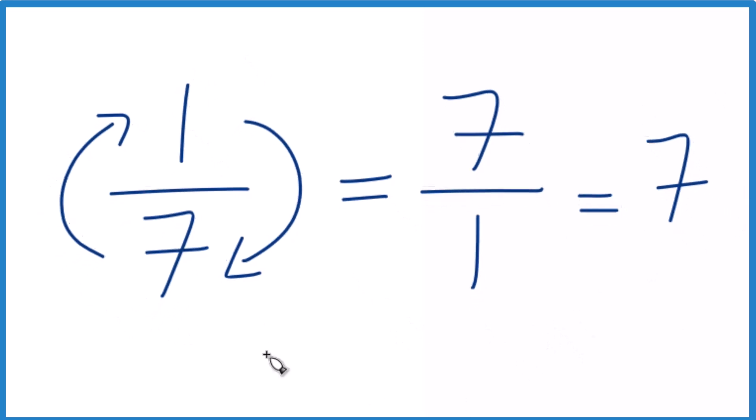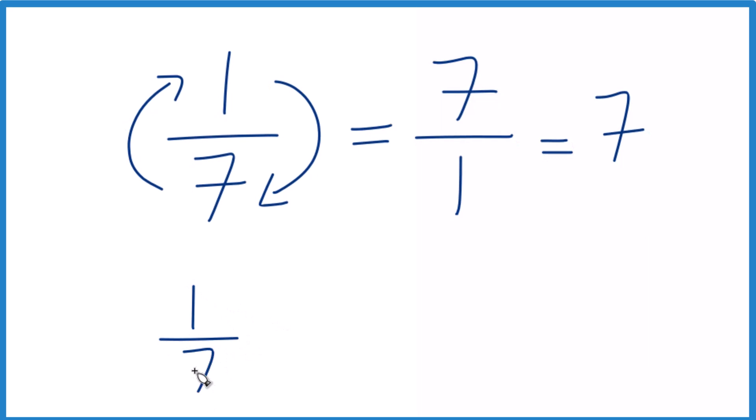And we can check that. We can take 1/7, and we can multiply that by its reciprocal, 7 over 1. And if we did this part correctly, we should end up with just 1.